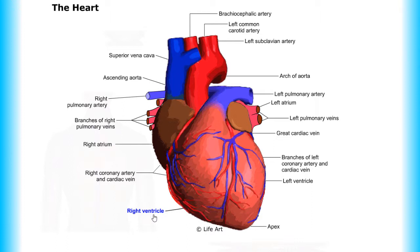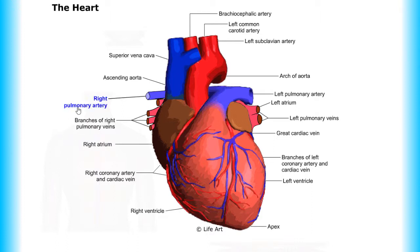Right ventricle, right coronary artery and cardiac vein, right atrium, branches of right pulmonary veins, right pulmonary artery, ascending aorta, superior vena cava.